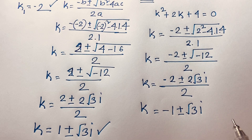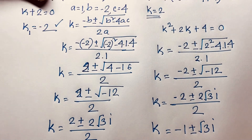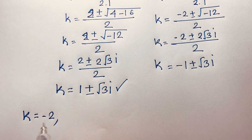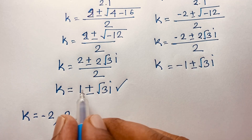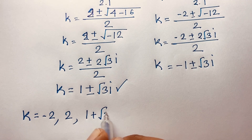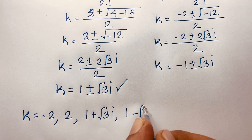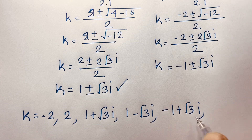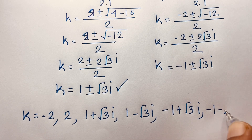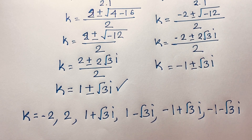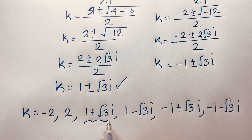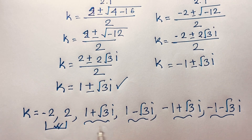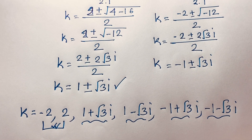So we find all 6 answers. k is equal to minus 2; k is equal to positive 2; k is equal to 1 plus square root 3i; k is equal to 1 minus square root 3i; k is equal to minus 1 plus square root 3i; and k is equal to minus 1 minus square root 3i. There are 4 complex solutions and the real solutions are k equals 2 and k equals minus 2.